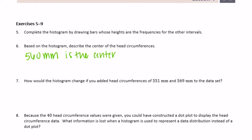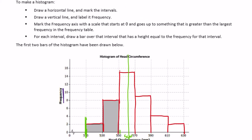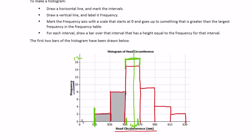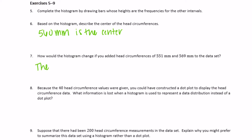Number seven: how would the histogram change if you added head circumferences of 551 and 569 millimeters? Both values fall in the 550 to less than 570 interval, so that bar would get two values higher — going up to 17. The bar for 550 to less than 570 would increase to a height of 17.